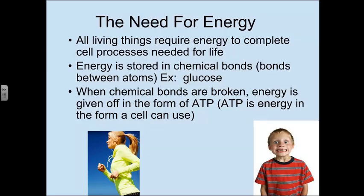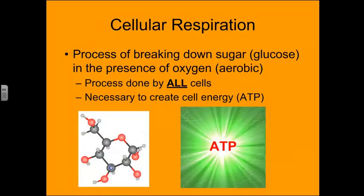Cellular respiration addresses the need for energy. We know that all living things require energy to complete their cell processes, and that includes for plants things like growing new leaves, growing fruit, and growing flowers. That energy is stored in chemical bonds — glucose, for the most part — and when chemical bonds are broken, we can release that energy and store it as ATP, which is like converting it into a currency that everyone in the cell can use.